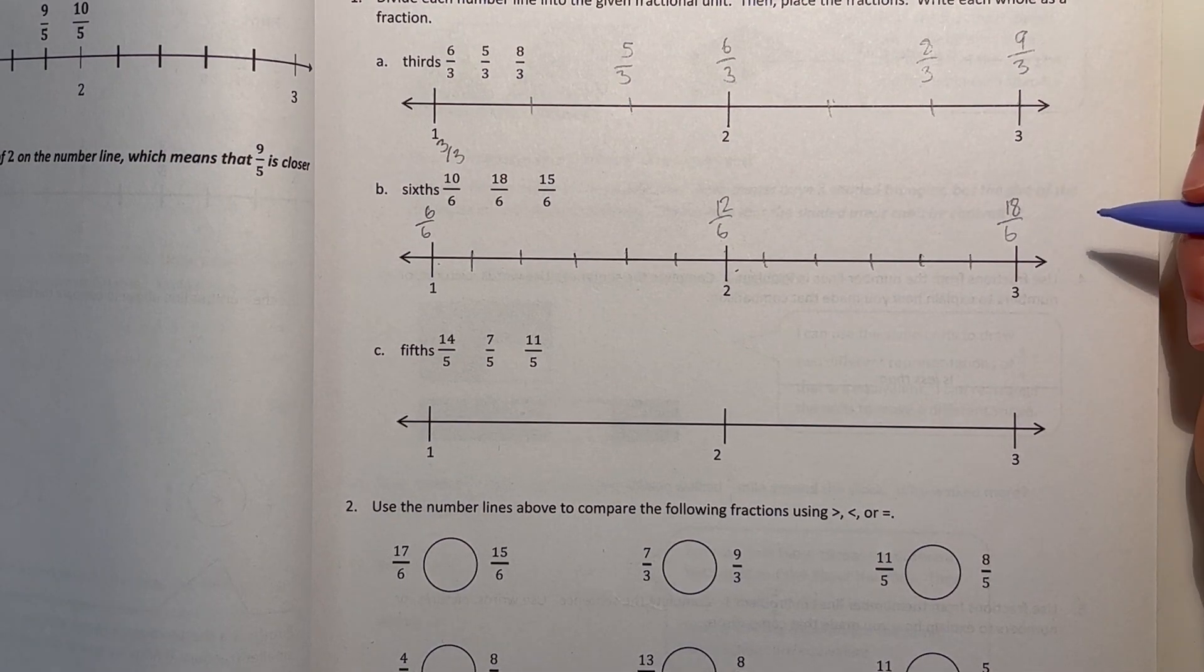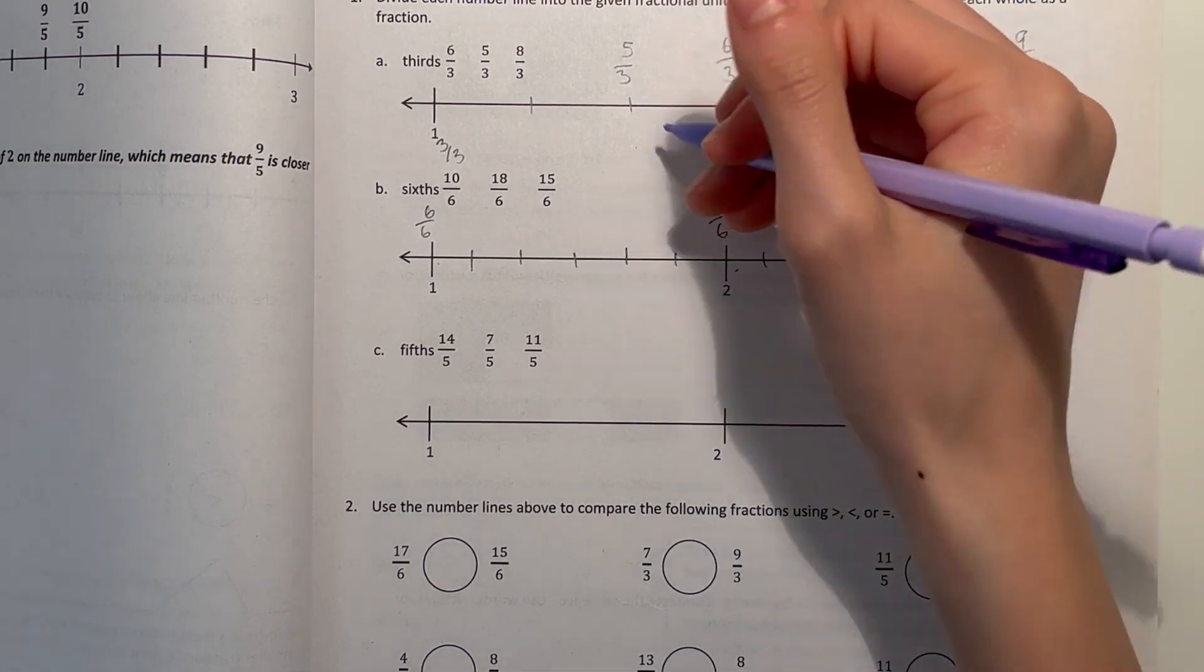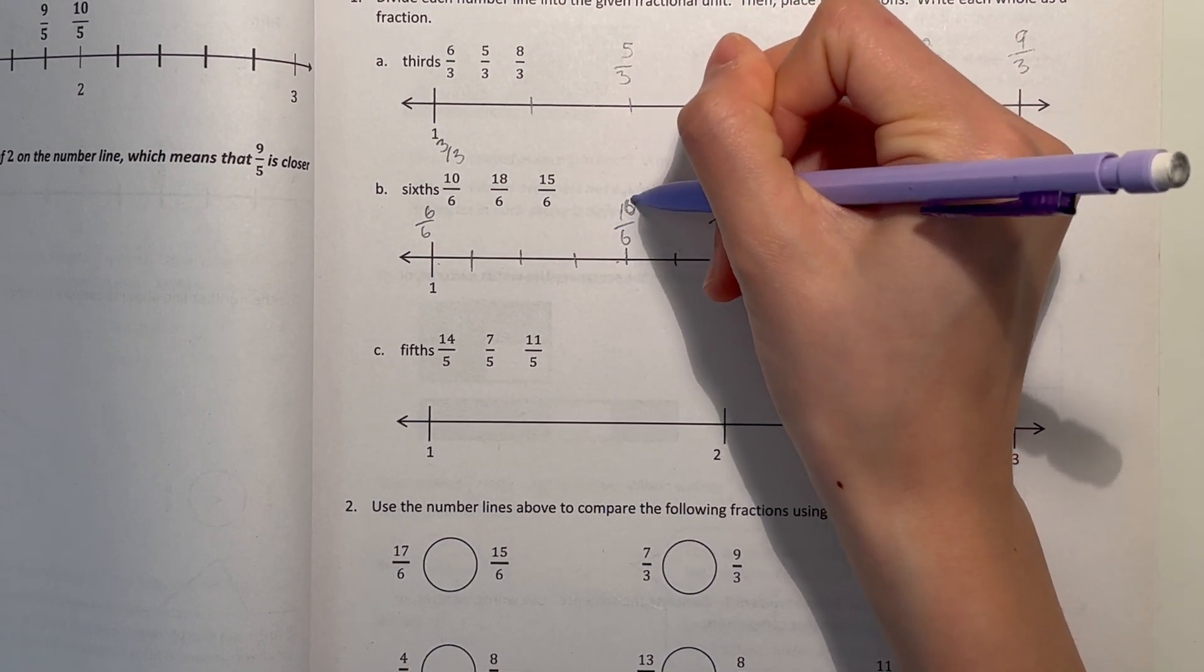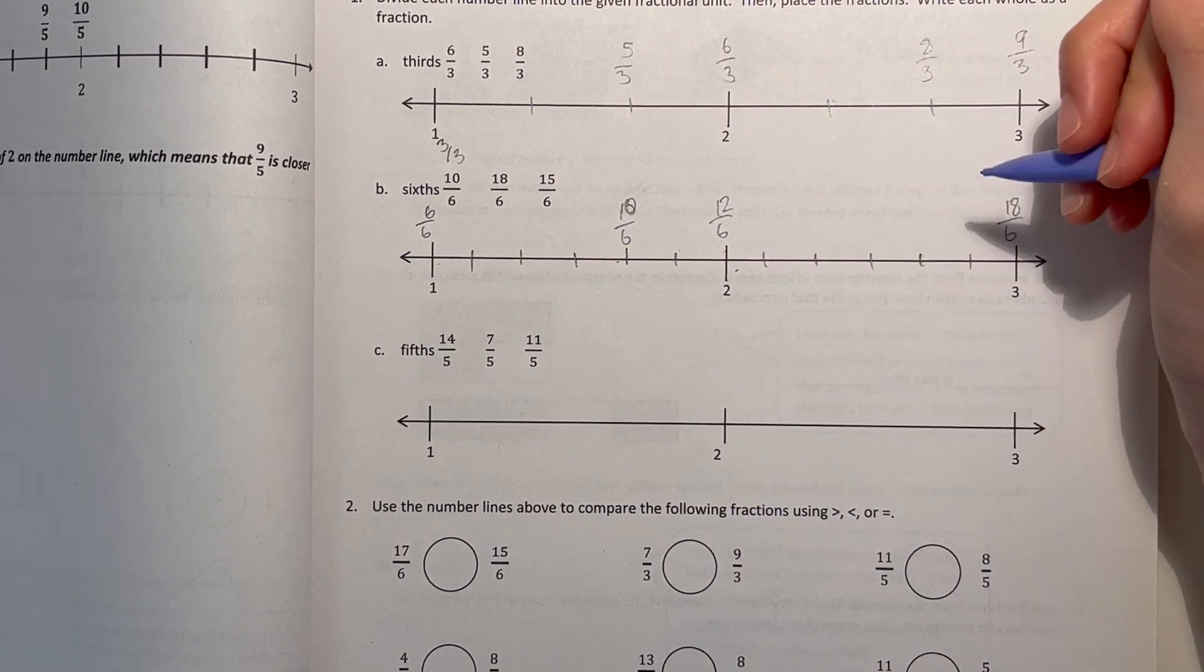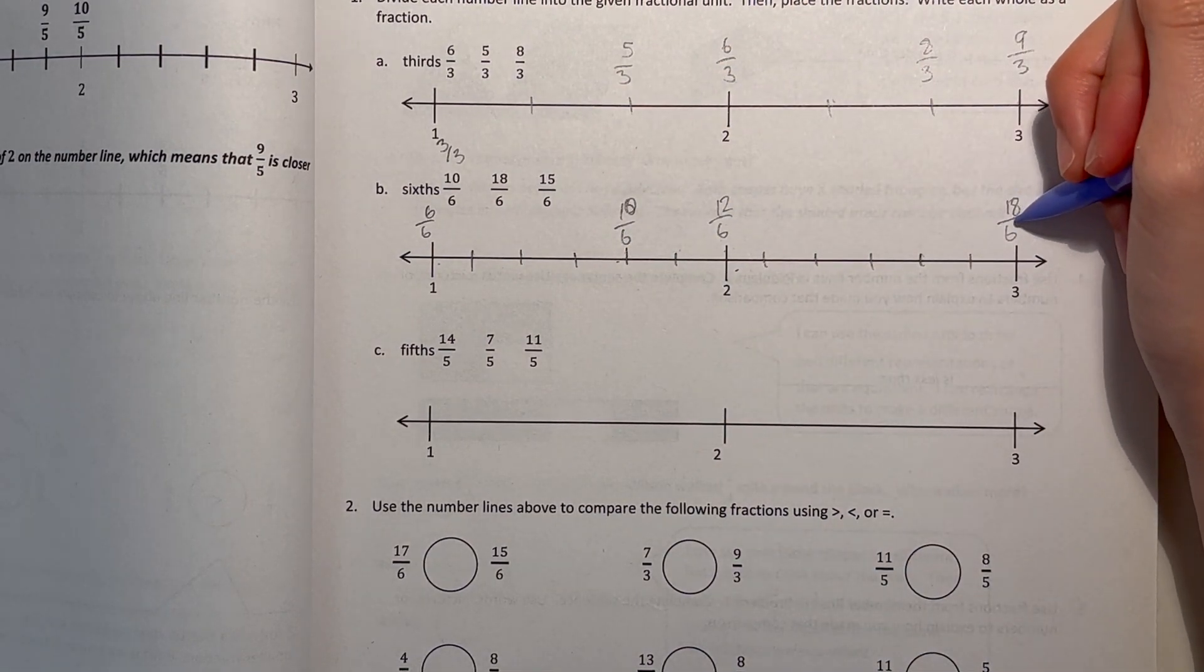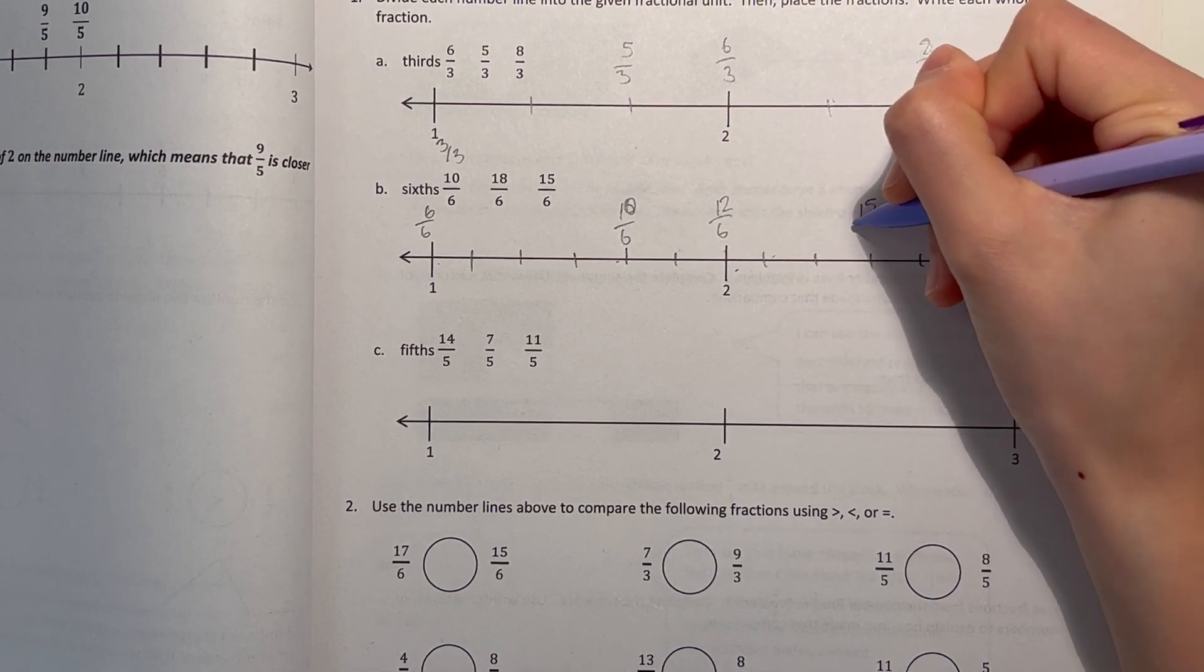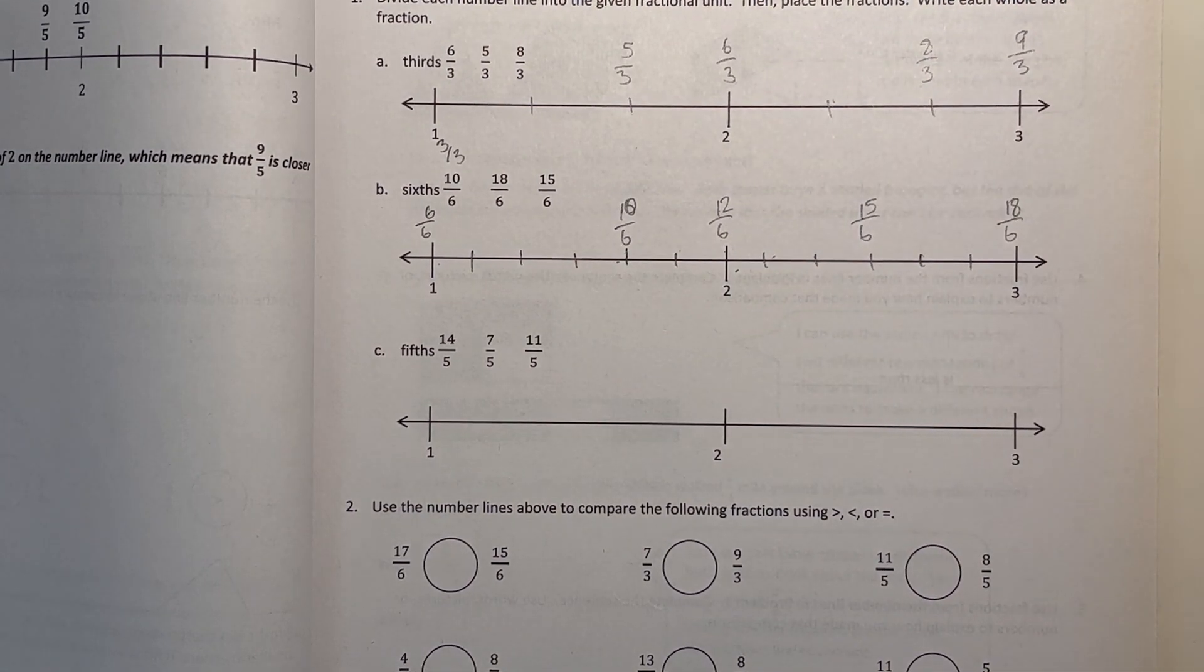So 10 over 6 would be, so 12, 11, 10 over 6, that's right here. And 18 over 6 is right here. And 15, 12, 13, 14, 15 over 6.